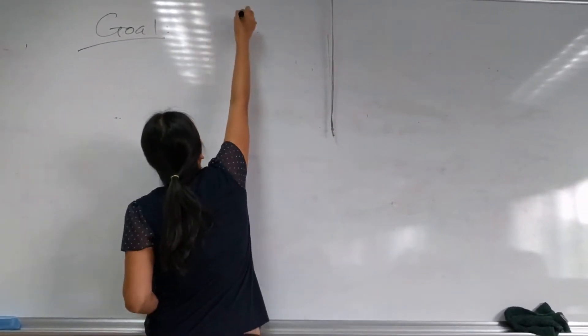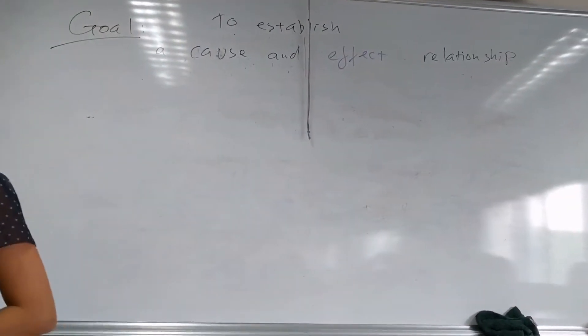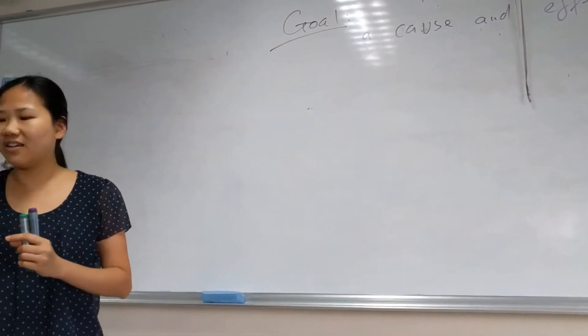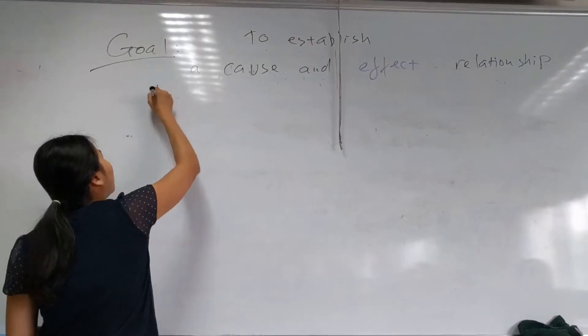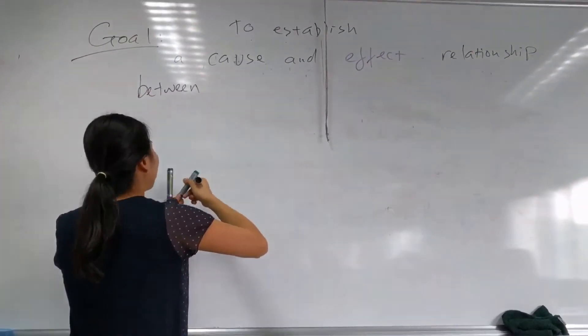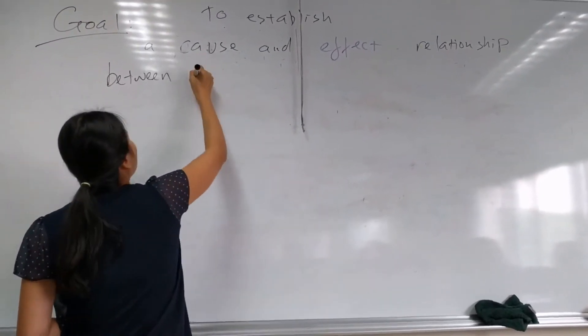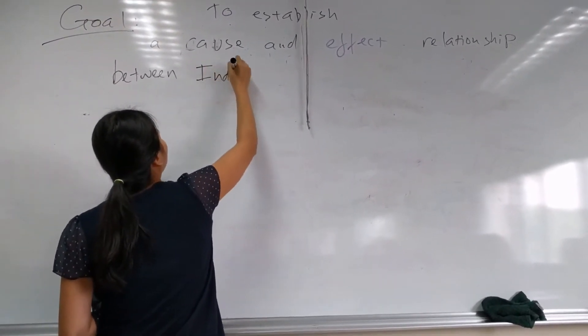The goal of the scientific method, the goal of any experiment, is to establish a cause and effect relationship between an independent and a dependent variable.